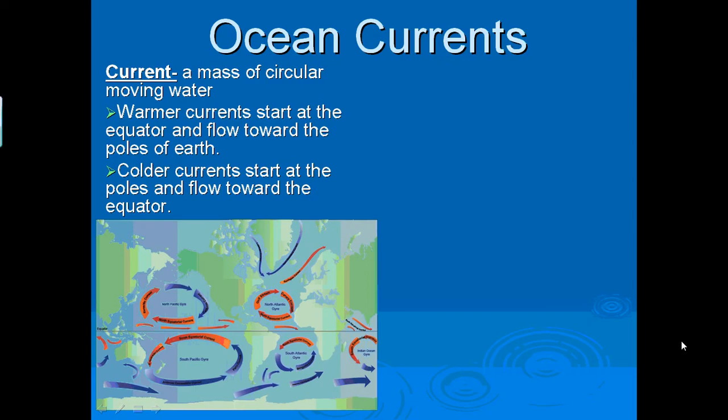So because it's warmer at the equator, we're going to have warmer currents at the equator. And it's colder at the poles of earth, so we're going to have colder currents at the poles of earth.